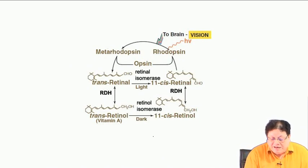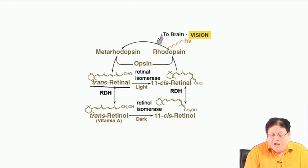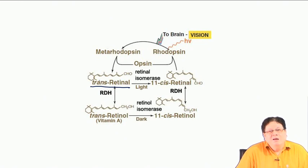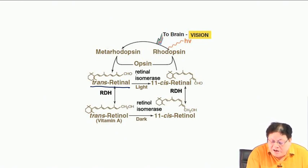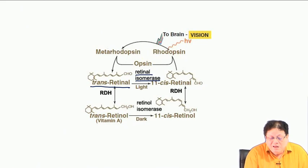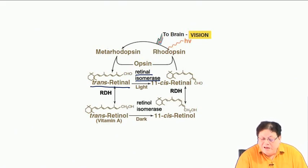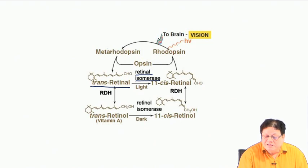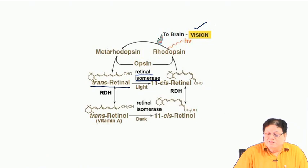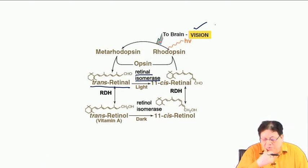So first it is trans retinal. There is retinal isomerase — the all-trans aldehyde goes to 11-cis retinal, which then reacts with the opsin protein to form rhodopsin. Rhodopsin in the presence of light creates a conformational change that creates a signal, and ultimately that signal is processed in the brain giving us vision.